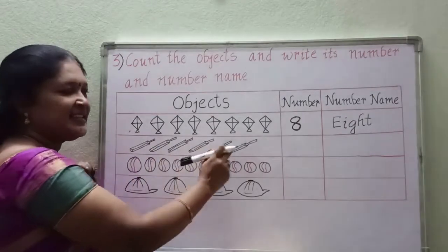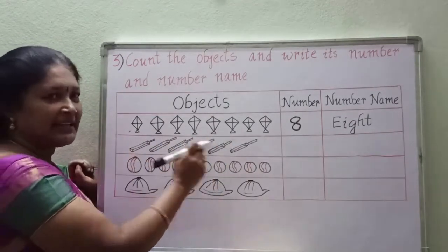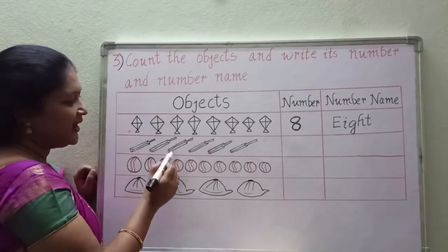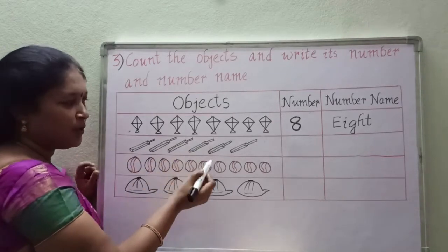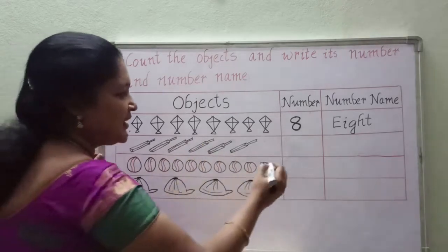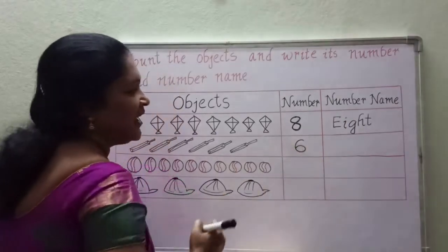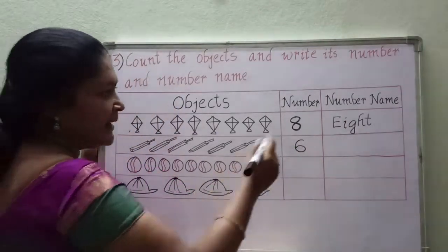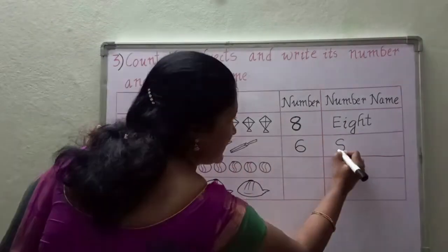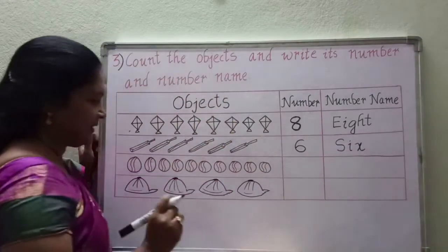And what are these children? Bats. How many bats are there? Let us count: 1, 2, 3, 4, 5, 6. 6 bats are there. So here write 6 number. And write the number name. What is the spelling of 6? S-I-X.